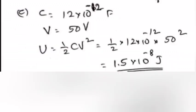Question 26C: A 12 pF capacitor is connected to 50 V battery. How much electrostatic energy is stored in the capacitor? Answer: C equals 12×10⁻¹² F, V equals 50 V. U equals half CV² equals half into 12×10⁻¹² into 50² equals 1.5×10⁻⁸ J.